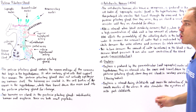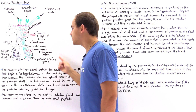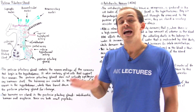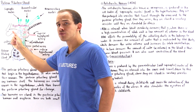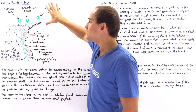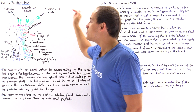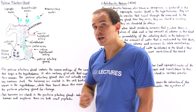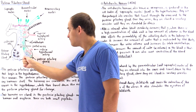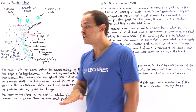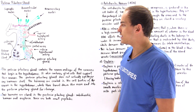To summarize: both ADH and oxytocin are not produced in the posterior pituitary gland. They are produced in the cell bodies of neurons found in the hypothalamus, and once produced, they are released and stored in the herring bodies in the region of the posterior pituitary gland.